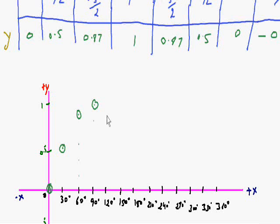Again 0.87, then 0.5, then 0. We are joining these lines.